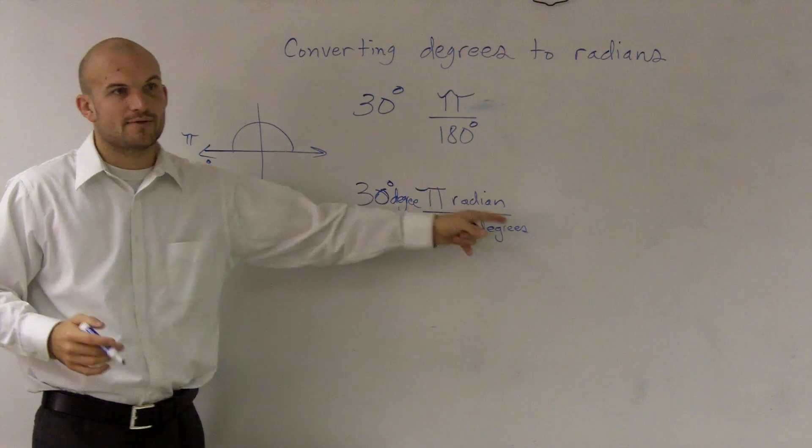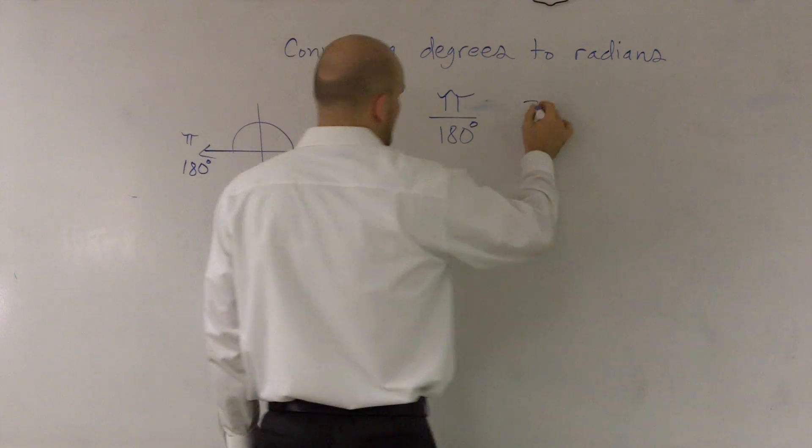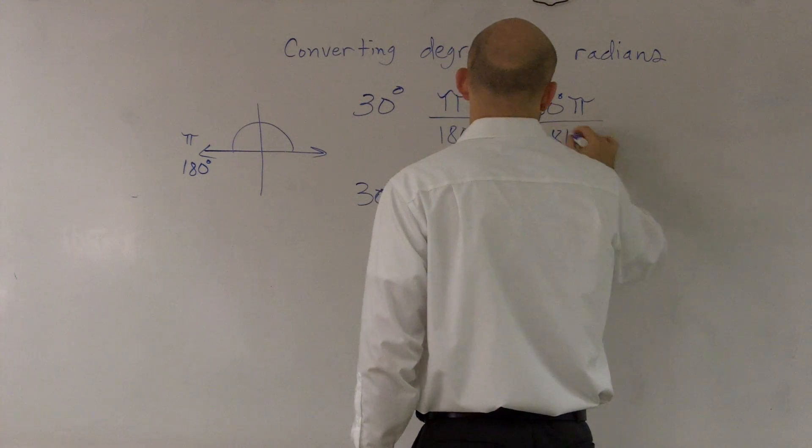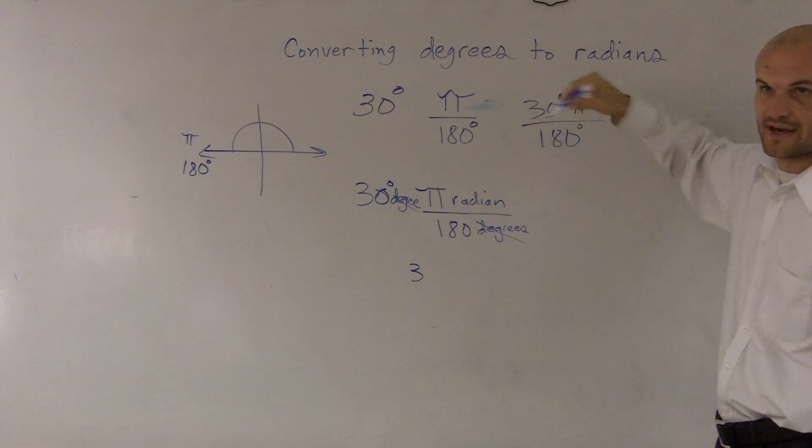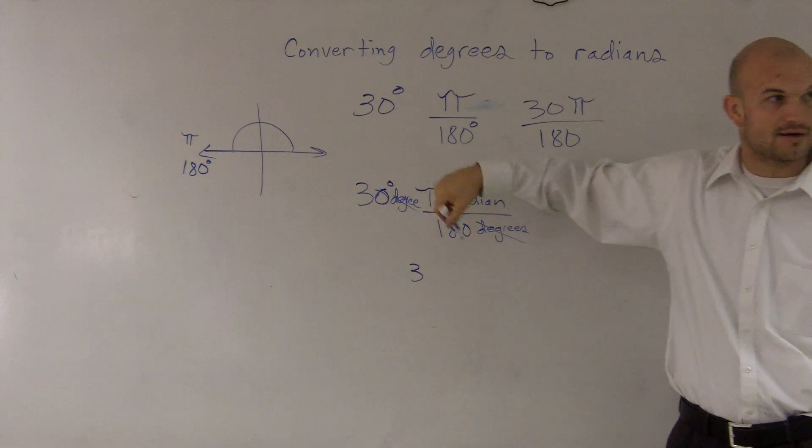what happens is a degree divided by a degree cancels out. And I'm left with 30 degrees pi over 180. Well, you can simplify this fraction. The degrees actually cancel out as I showed you.